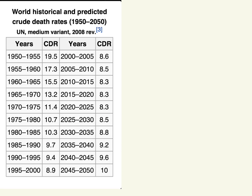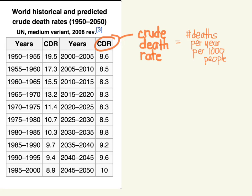We can also compare mortality across time. This table from that same page compares crude death rates (CDR) in five-year increments starting at 1950 and projected up to 2050. The CDR is the number of deaths per year per 1,000 people. You can see it has been steadily improving over time, though there appears to be a bump where things seem to get worse from around 2025 to 2045 — we'll have to wait and see what happens then.